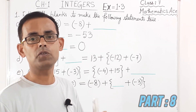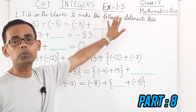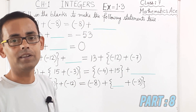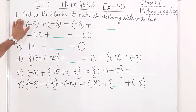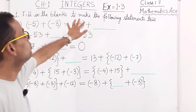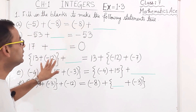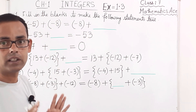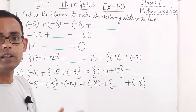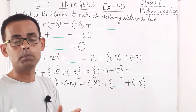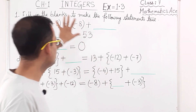Students of class 7, today we are going to solve exercise 1.3. I know you were waiting for when I will start teaching 1.3 — yes, it took a long time. Question number one: fill in the blanks to make the following statements true. We can do this because we have studied the properties of addition as well as the properties of subtraction. Once we know those properties, these things become easy.